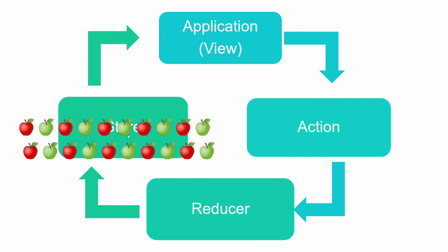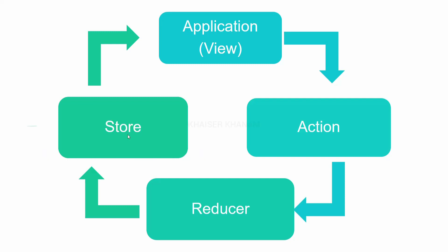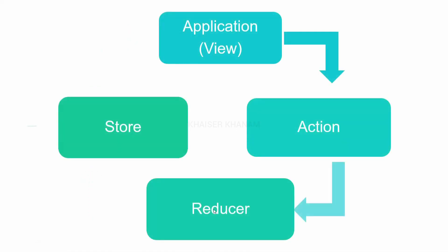In the next tutorial I will show a simple example for more clarity. Just remember: application to action, action to reducer, reducer to store, and store to application. The data cannot skip steps — you cannot get data directly from action to store, bypassing reducer. The data flows in one direction only — it is unidirectional. Action tells what to do; reducer tells how to do it.